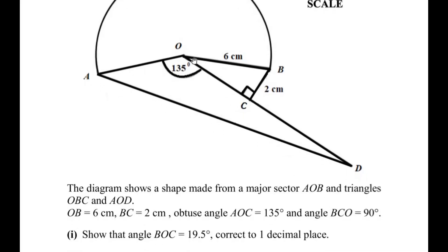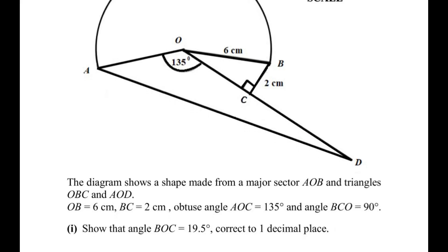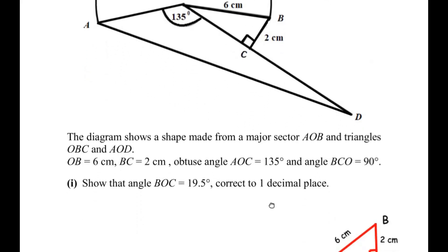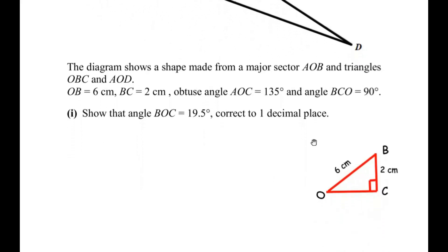The first question is to show that angle BOC is 19.5 degrees, correct to one decimal place. To find angle BOC, let us start by considering the right-angle triangle BOC. Let me redraw it here. We will now focus on the angle asked, which is angle BOC.